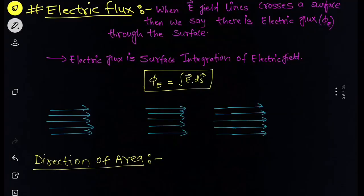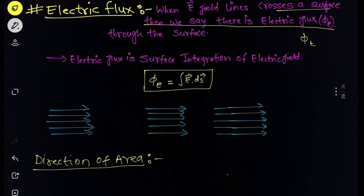So till now we have studied the electric field due to some cases like ring, disk, and all of that. But to find the electric field for symmetric cases like sphere, cylinder, and all that, we need to first understand Gauss's law. In this session we'll study Gauss's law and electric flux. Now what is electric flux? We know that when electric field lines cross a surface, we say there is electric flux — represented as Φ_E through the surface.